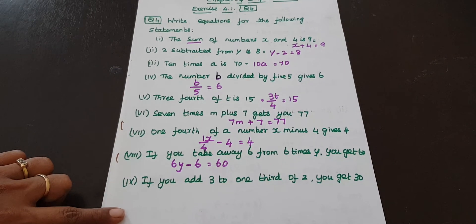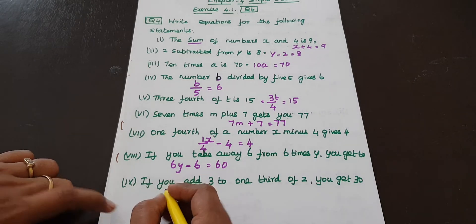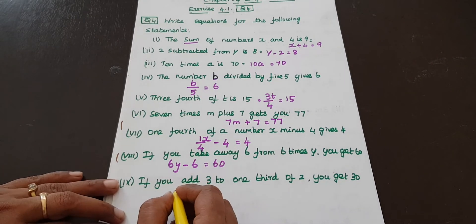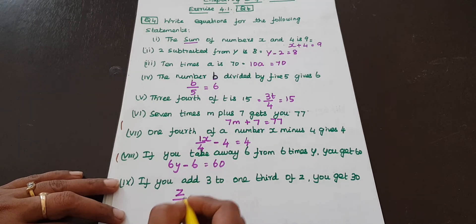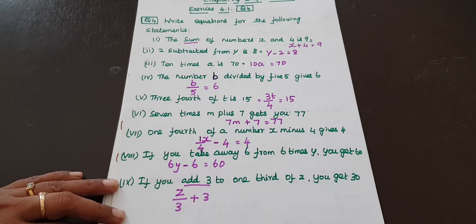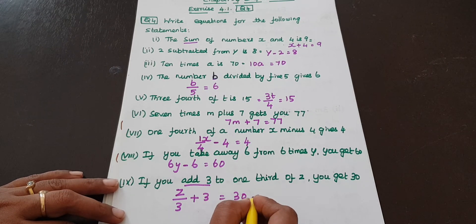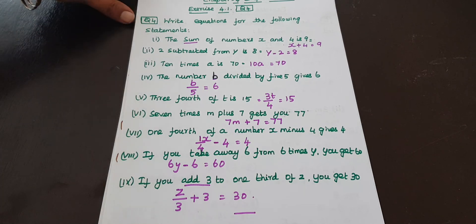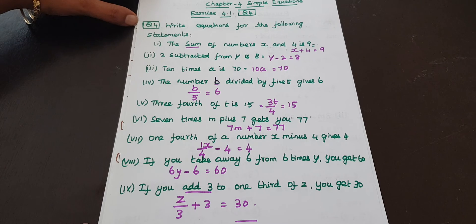Next: if you add 3 to one third of z, you get 30. One third of z is z over 3, plus 3 is equal to 30. So we have converted all statements into equations. Let's look at question number 5 next.